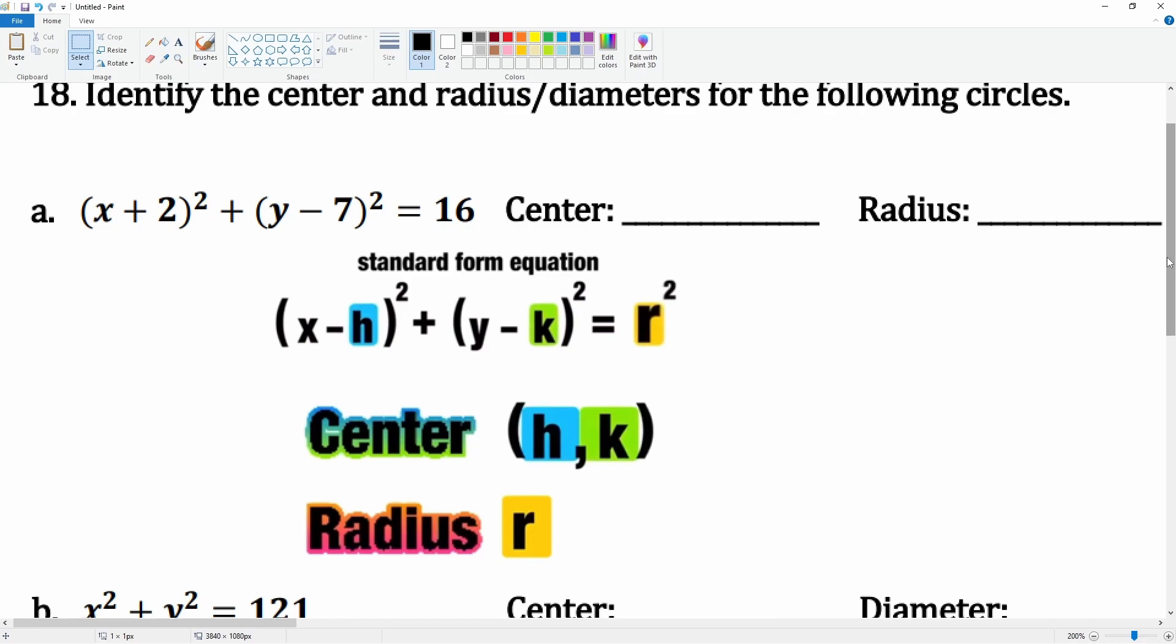So let's find the h here. This has to be a minus, so this is going to be a minus negative 2, so the h here is going to be negative 2. Then the k here, there's already a minus here, so this can just be the k of 7, so that is 7 here.